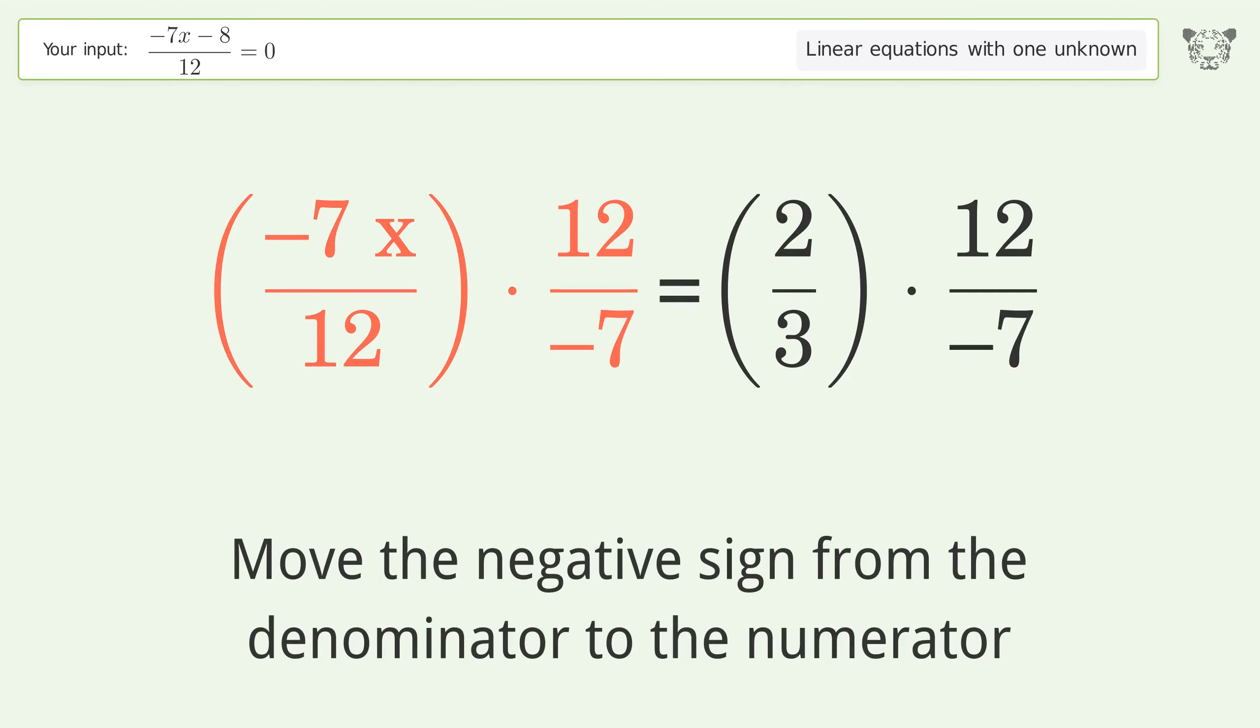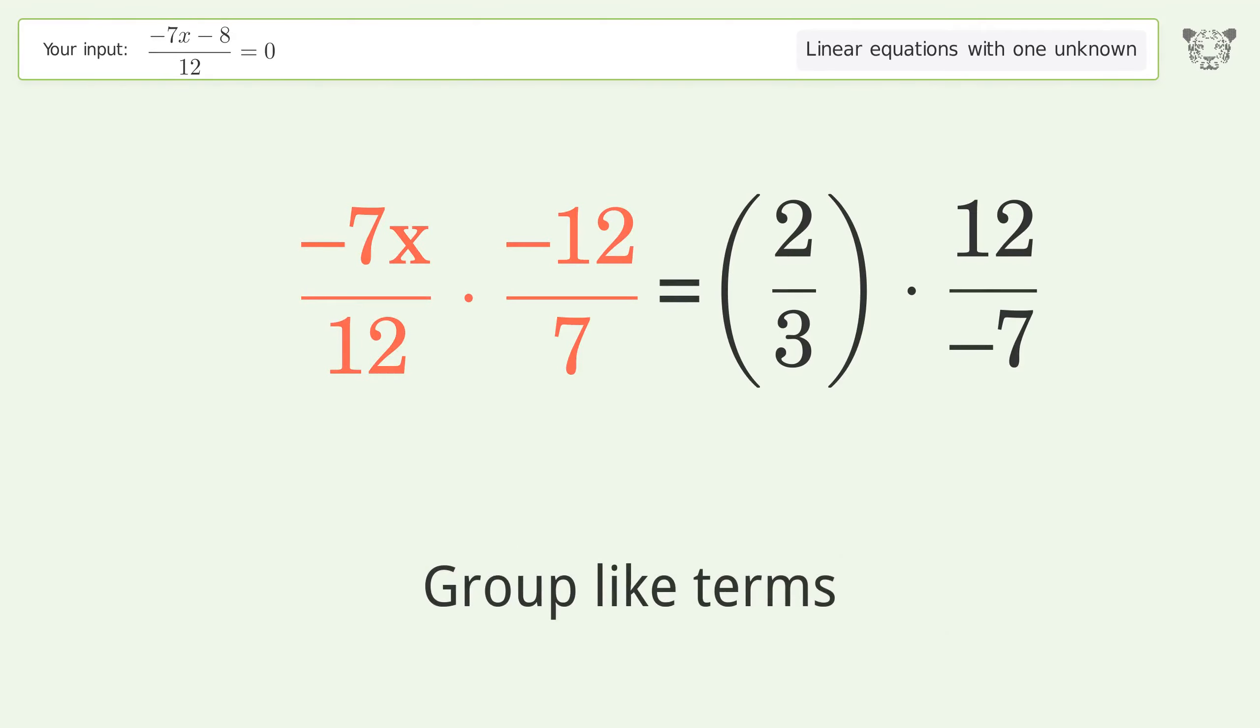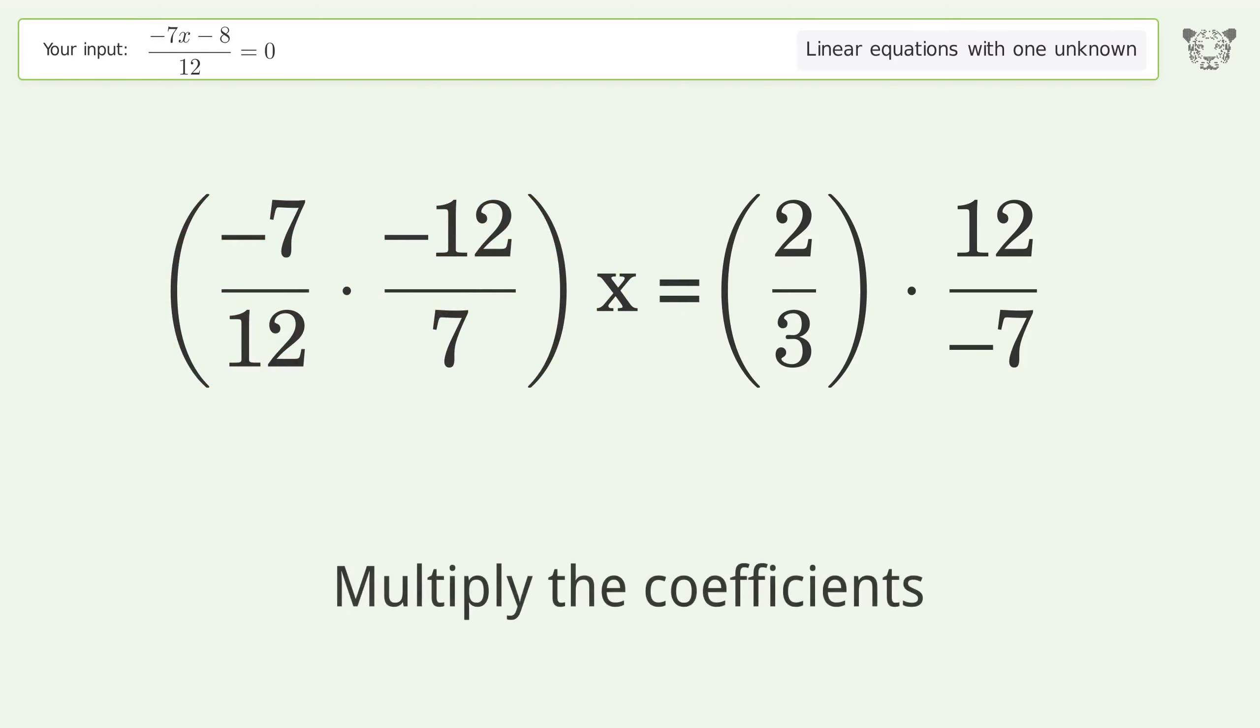Move the negative sign from the denominator to the numerator. Group like terms. Multiply the coefficients.